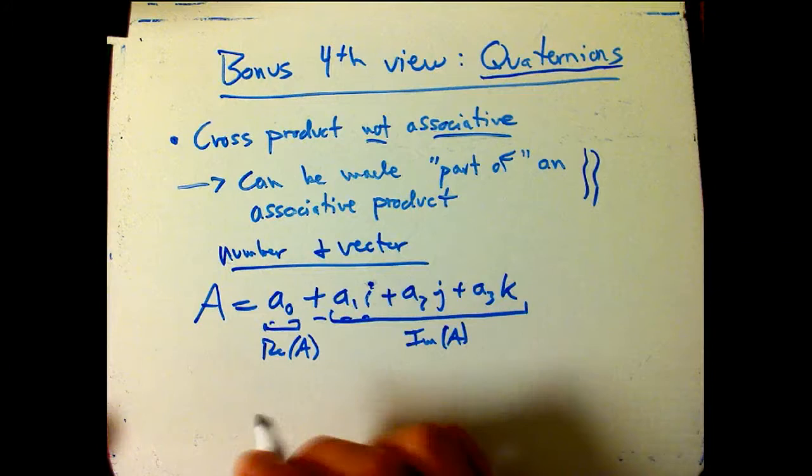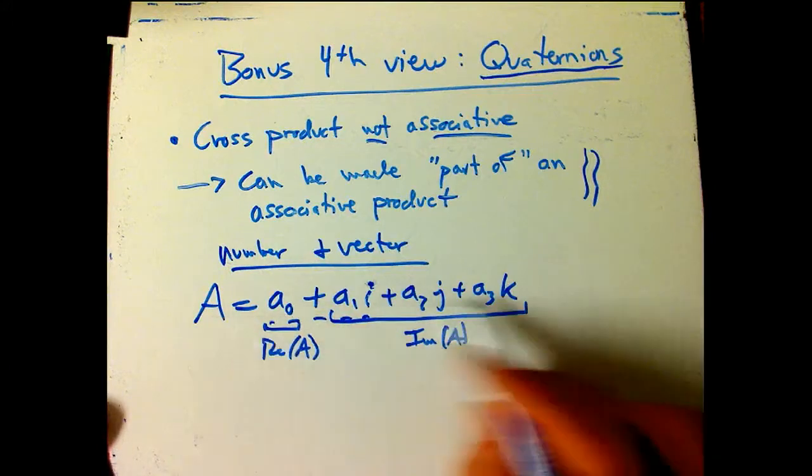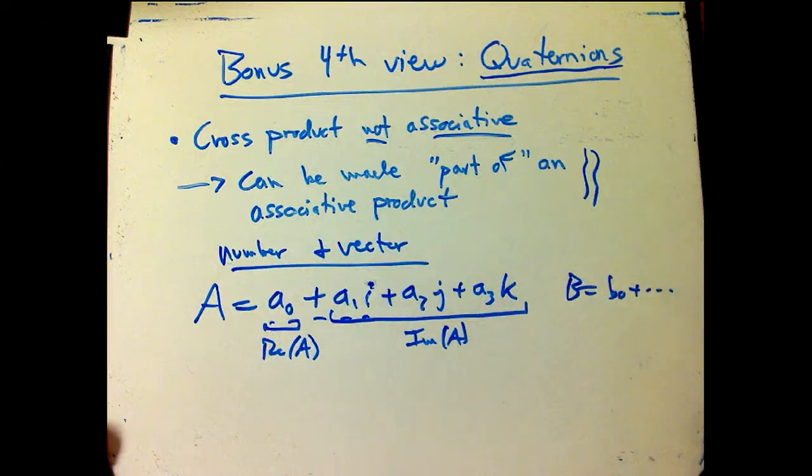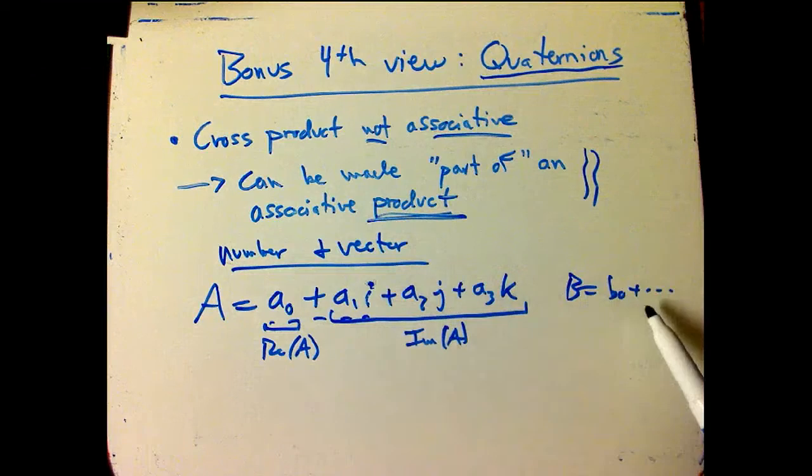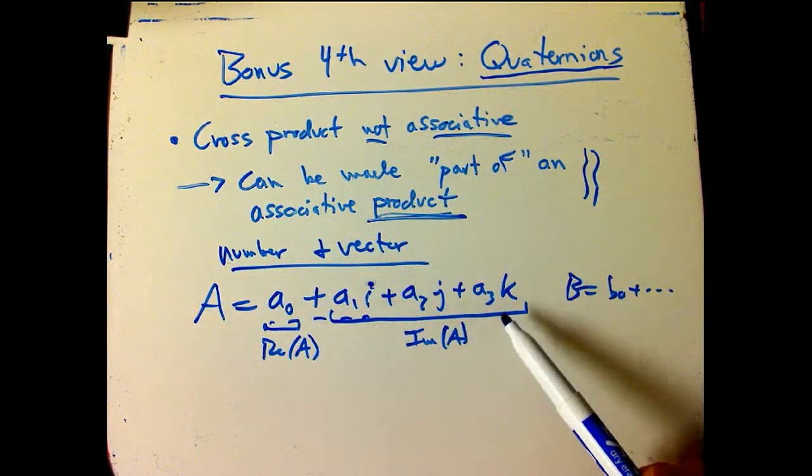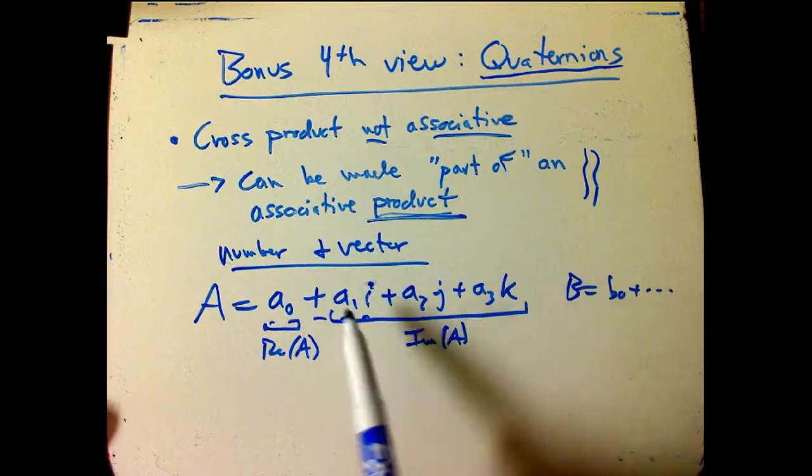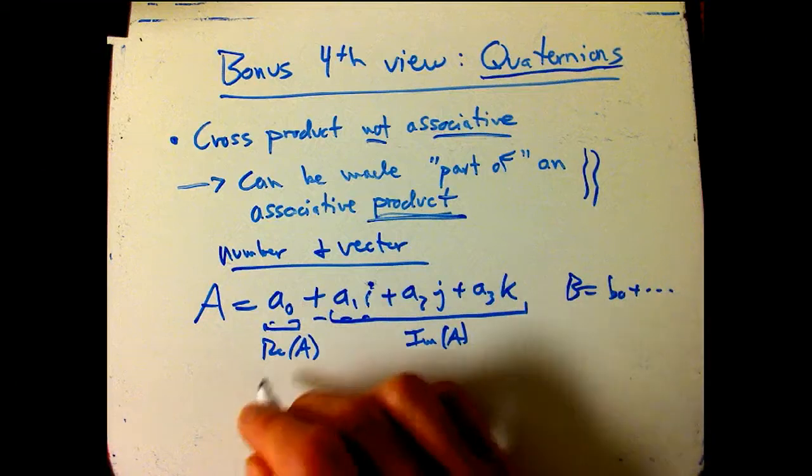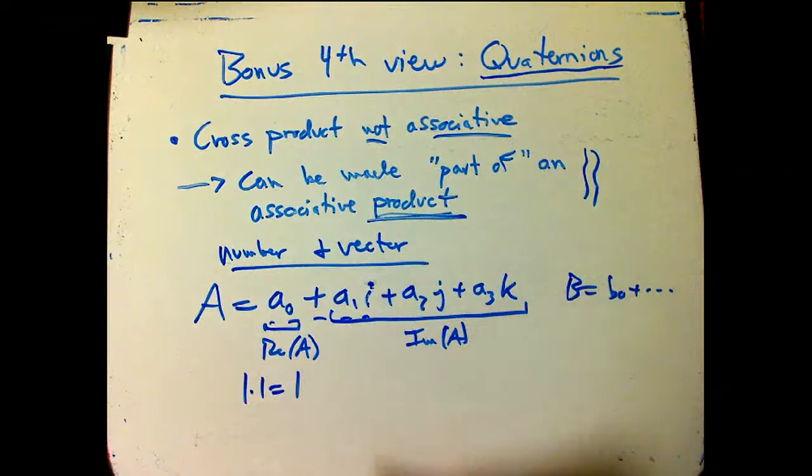So here's the definition. I want to tell you what happens if I multiply something like this by B, which is going to be the same thing, b₀ plus b₁i, etc. To deserve the name of a product, it's got to distribute over addition. That's always true. So I really just need to tell you what happens to all the individual pieces, because I can kind of foil it out. A₀ times B₀, 1 times 1, obviously, should be 1.